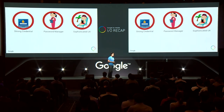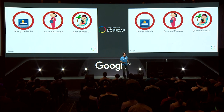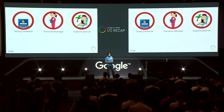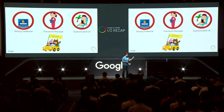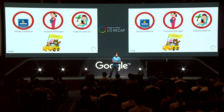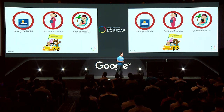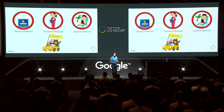Now we've covered strong credentials, password manager, and sophisticated user experience — all three requirements we think are needed. But there's one more thing we're missing: openness. Smart Lock for Password only allows Google properties as credential storage. But in the ideal world, it should be possible to store credentials in third-party credential storage like password managers. Users should have a choice of password manager.